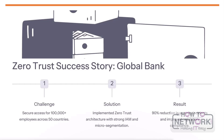In a case study about a global bank implementing a zero-trust security architecture, the key challenge was securing access for over 100,000 employees across 50 countries. To address this, the bank implemented zero-trust architecture focusing on strong identity and access management and micro-segmentation in the network. As a result, they achieved a 90% reduction in security incidents and improved regulatory compliance. This demonstrates the real-world benefits organizations can achieve by adopting a zero-trust security model.